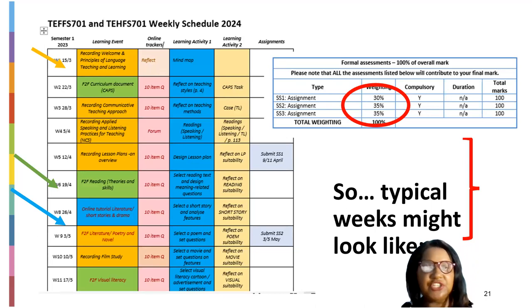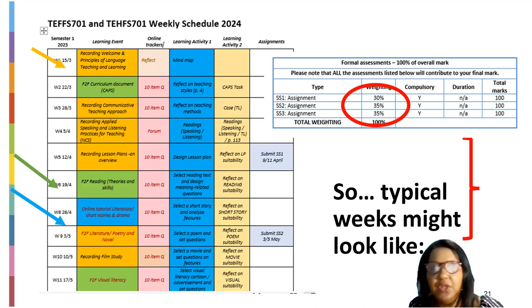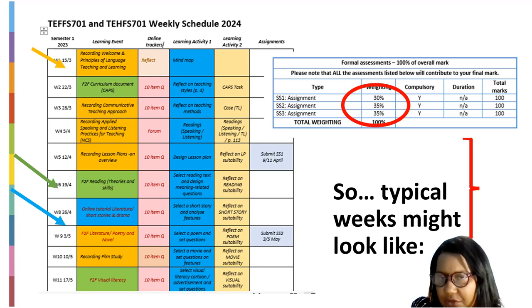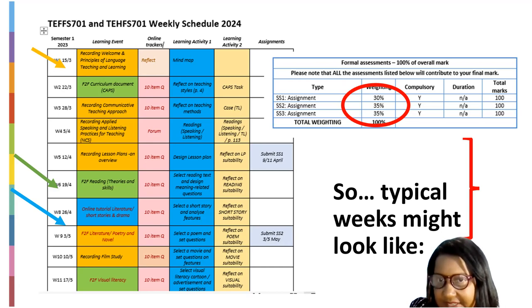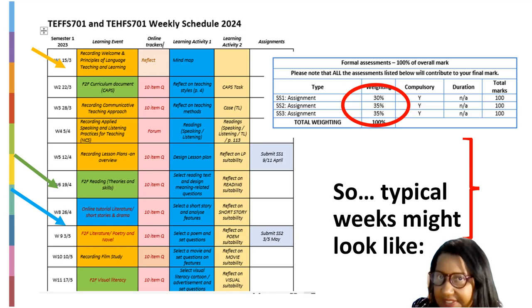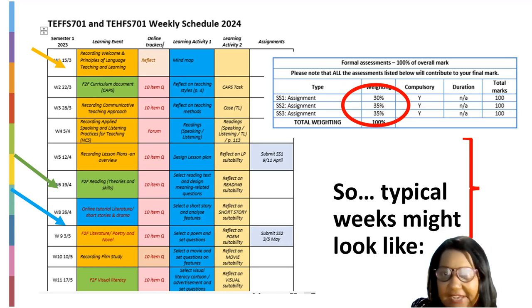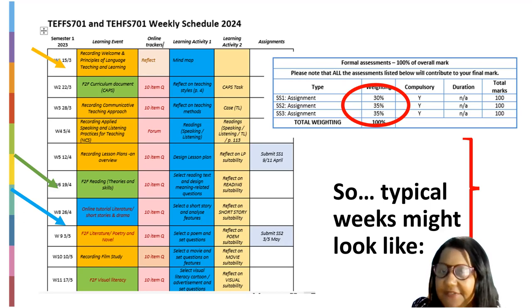Now, your assignments. You have SS1, SS2, and SS3 — essentially assignment one, two, and three. The weightings are 30% for SS1, 35% for SS2, and 35% for SS3, giving you a total of 100%. If you do not submit an assignment, the possibility of failure is very high. Please look at the weights and take them seriously.